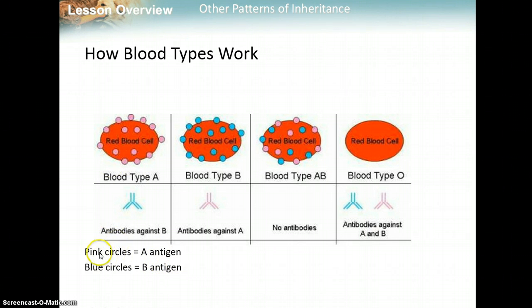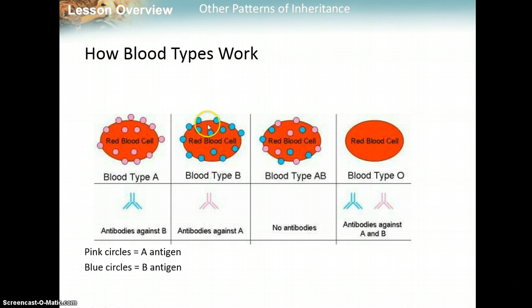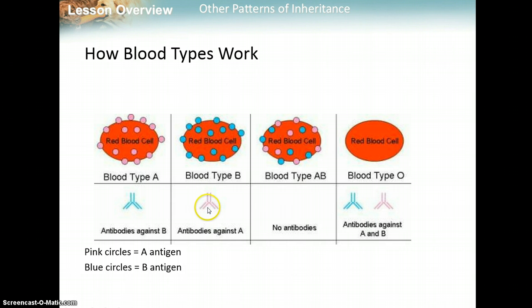Blood type A is symbolized by pink circles representing antigen A. When you have blood type A, you produce antibodies that would attack B blood. When you're type B, you have blood cells with antigen B, and you produce antibodies against type A blood. So this would clump up if it was mixed with type A blood. That's why a type B person can't receive type A blood — they have antibodies that attack that A blood.